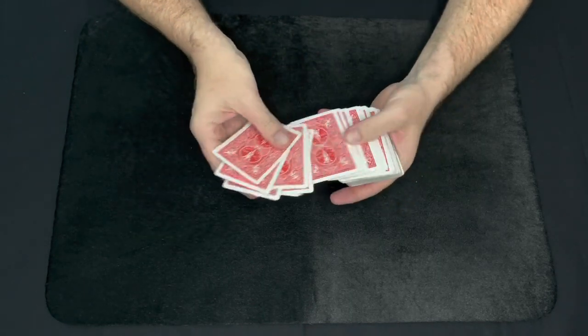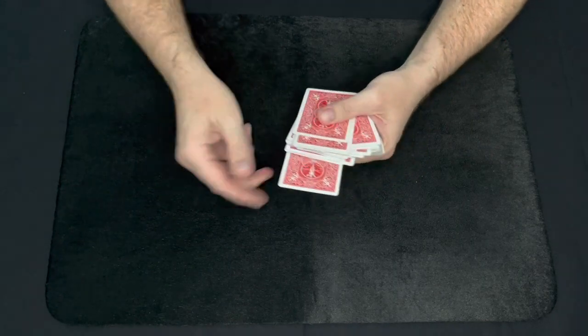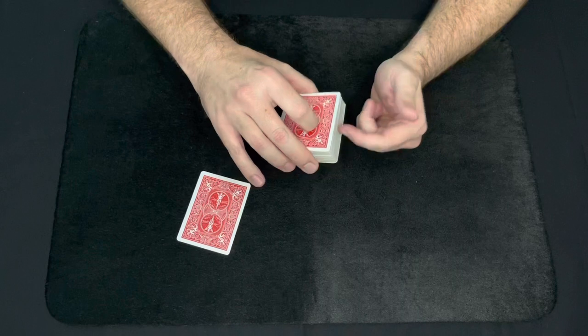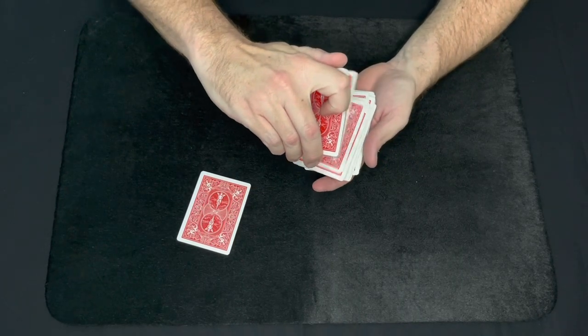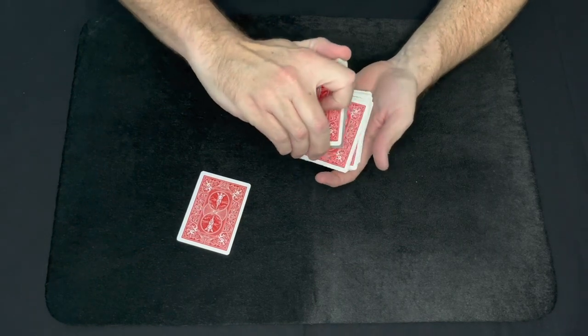Now you have a spectator just pick any card. They can pick any card except for the bottom card, so you just have them select any card in the middle. If you're worried about them always picking the bottom card, just say, as I go through the cards like this—and just do a dribble—just tell me when to stop, and you can get them to select a card like that.